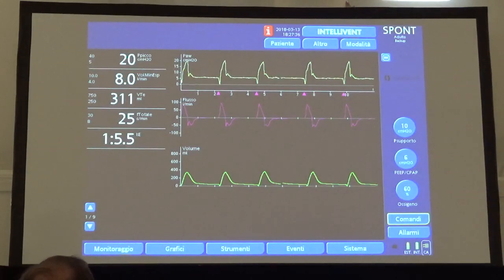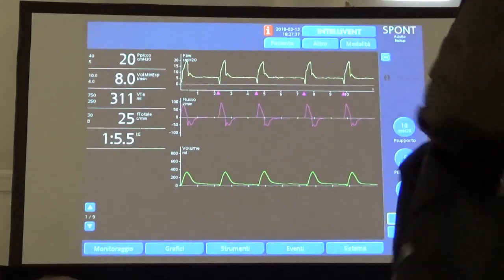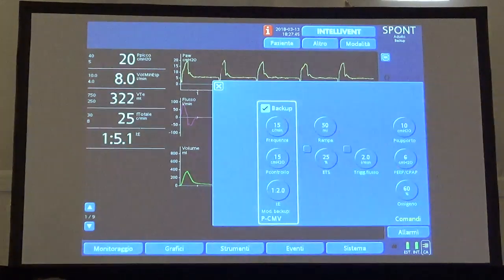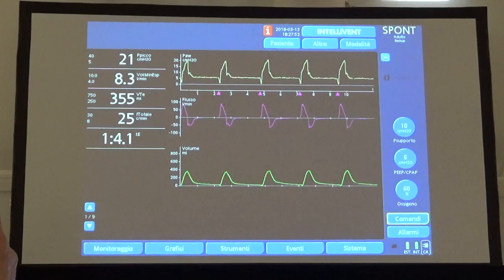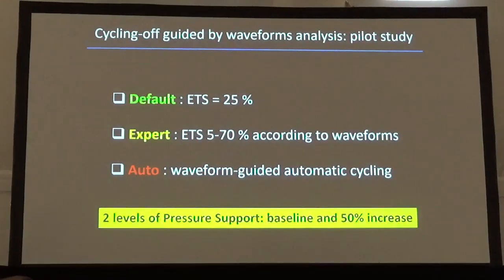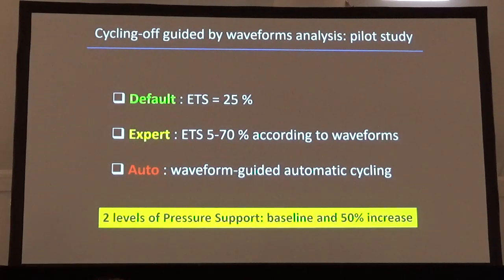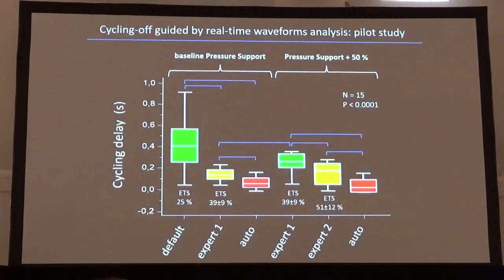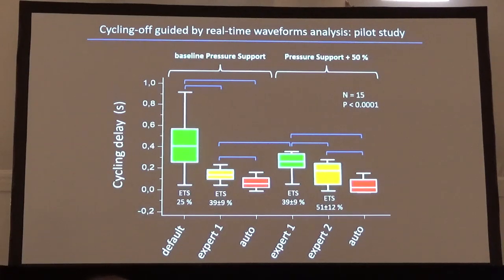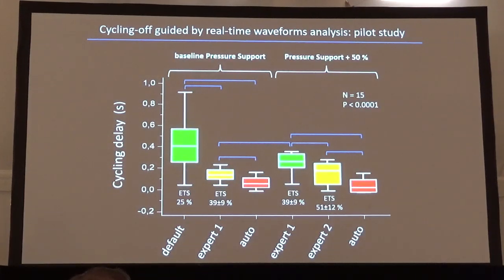This function seems to be effective also in restrictive patients suffering from early cycling. We performed a pilot randomized crossover study to compare the default setting of expiratory trigger with the expert setting and this automation, testing two different levels of pressure support — the baseline and a 50% increase. Both the expert setting, displayed in yellow, and the automation in red improved patient-ventilator interaction, decreasing late cycling, with automation slightly outperforming the expert setting.